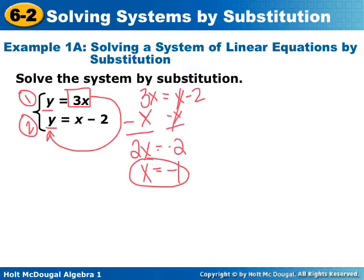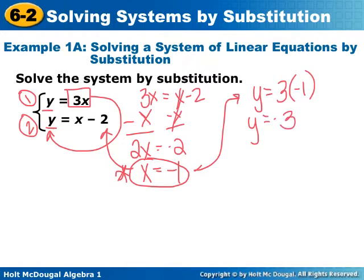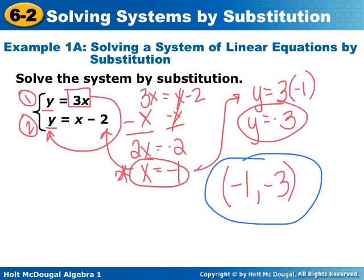Now our next step is to take what we got for x and substitute it back into one of these equations. It does not matter which equation you substitute into. Pick the one that you think is going to be easiest. So I'm going to substitute x in right here. So y is negative 3. So I've got x equals negative 1 and y equals negative 3. My last step is to write it as an ordered pair. You always write your answers as ordered pairs when you're solving systems. Always.